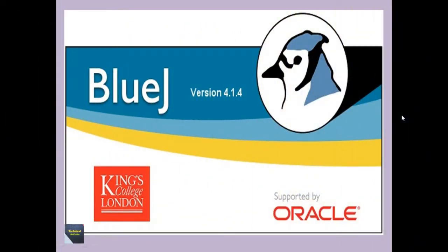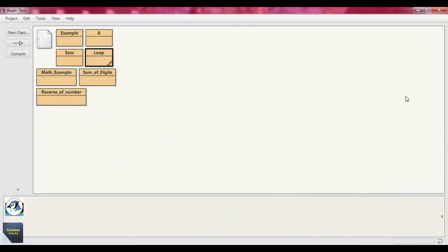Hello friends, welcome to my channel Technical ArchMend, myself Arnup Kundu. Today I will discuss another Java problem using BlueJ IDE. Here I am using BlueJ version 4.1.4. The problem is to take a year as input using a Java program and find out whether the year is a leap year or not. So go to the BlueJ IDE — I will write the logic of that problem. This is the BlueJ IDE, and here I will write the program for leap year or not.